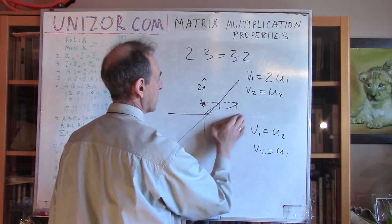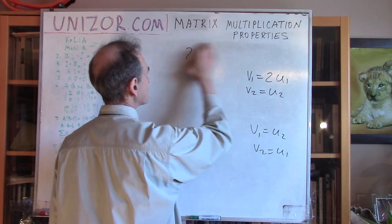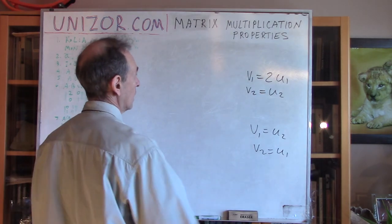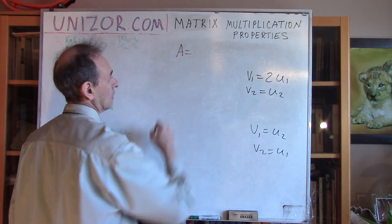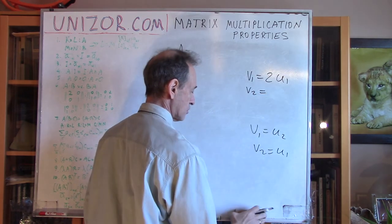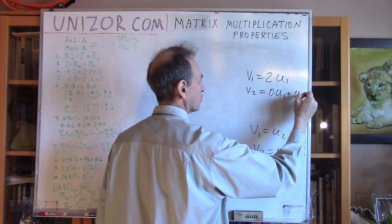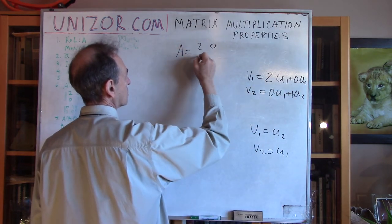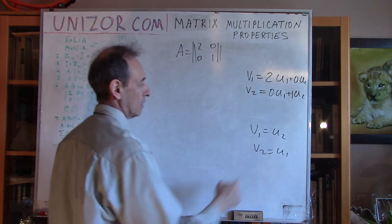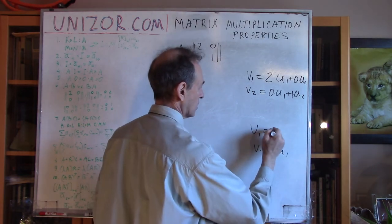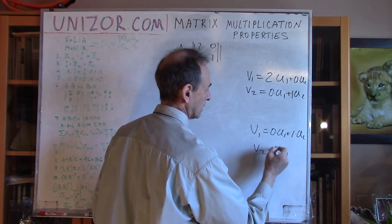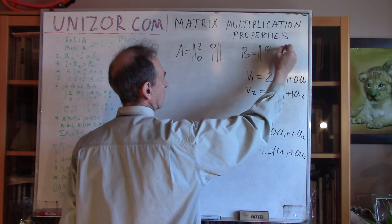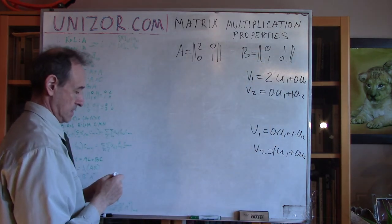Let's verify this algebraically using matrix representations. The stretching transformation gives matrix A = [2, 0; 0, 1], since v1 = 2·u1 + 0·u2 and v2 = 0·u1 + 1·u2. The reflection transformation gives matrix B = [0, 1; 1, 0], since v1 = 0·u1 + 1·u2 and v2 = 1·u1 + 0·u2. Now let's multiply these matrices in both orders according to the rules of matrix multiplication and check our geometric intuition with algebra.